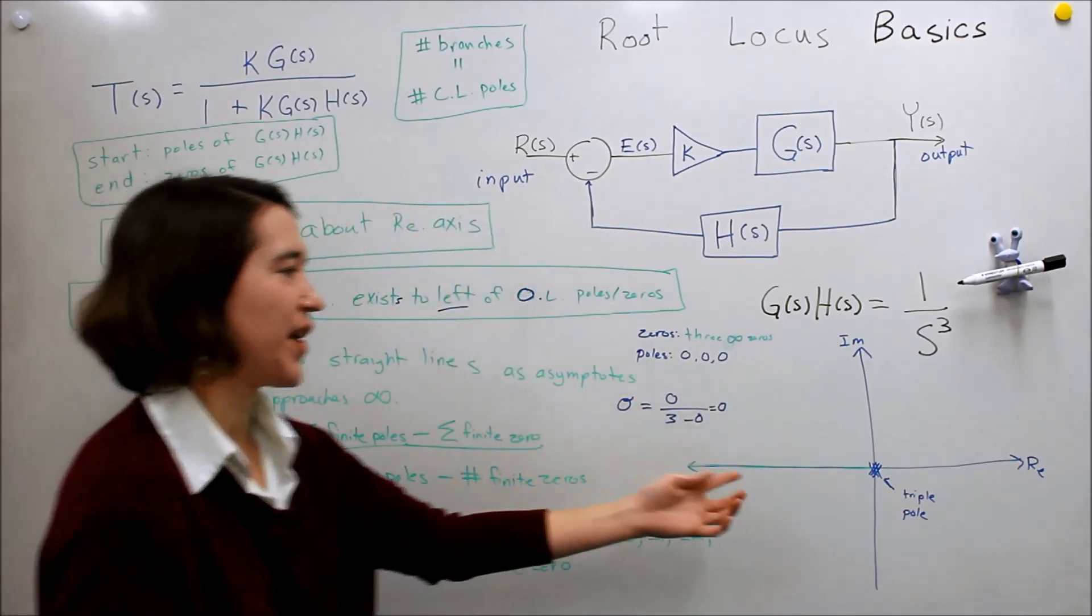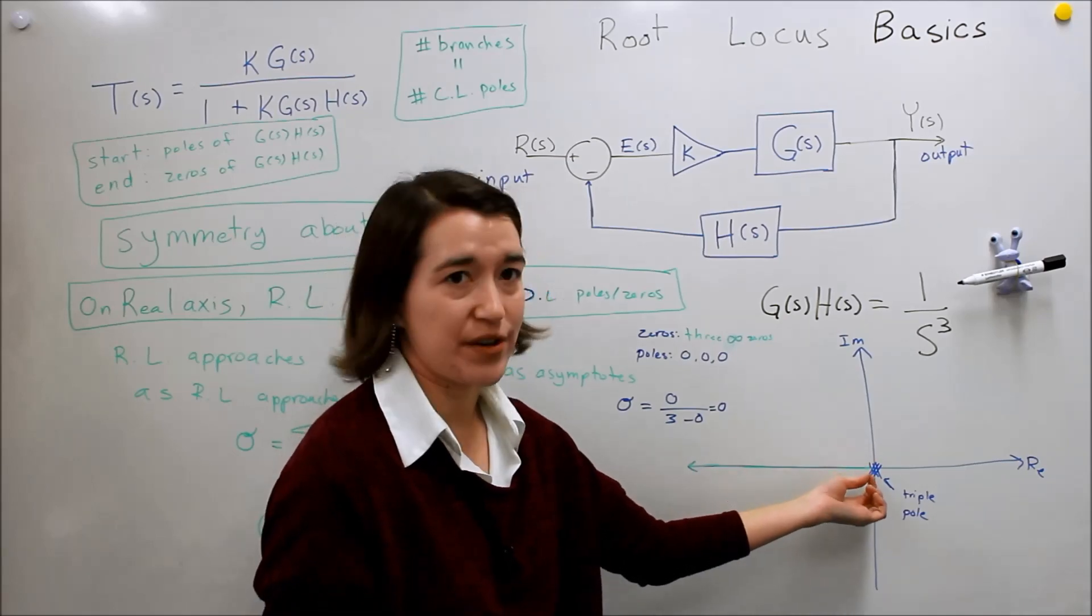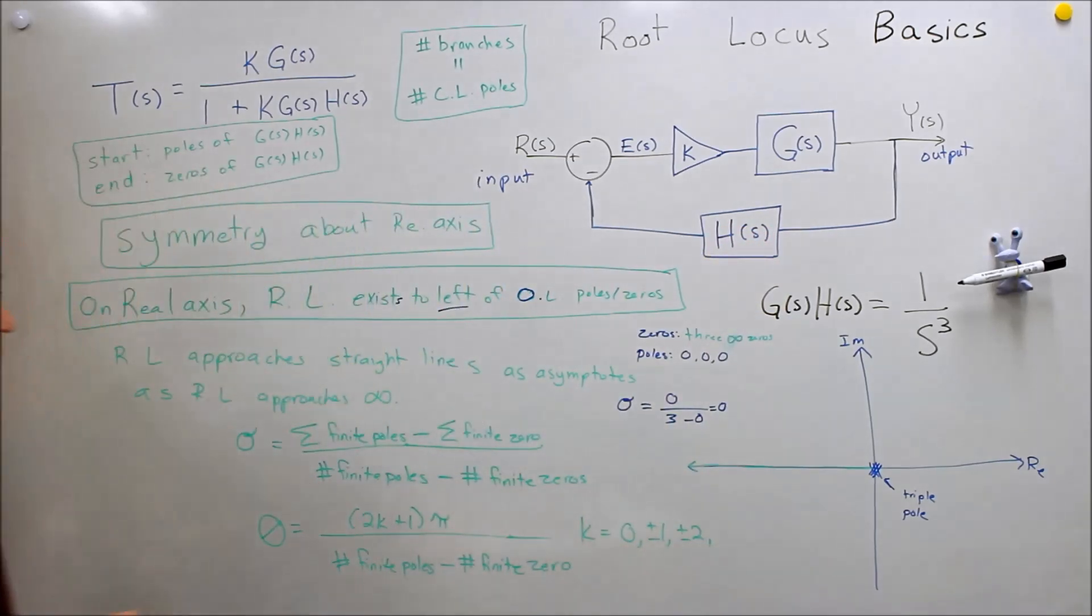Which makes sense, because in this case it's a very simplified example. All of the poles are starting at zero. So it makes sense that we're going to start from there and go out somewhere.